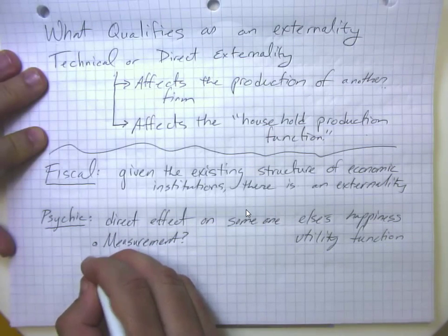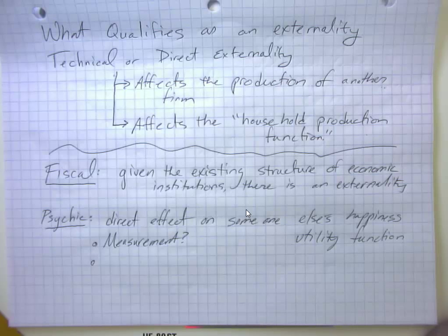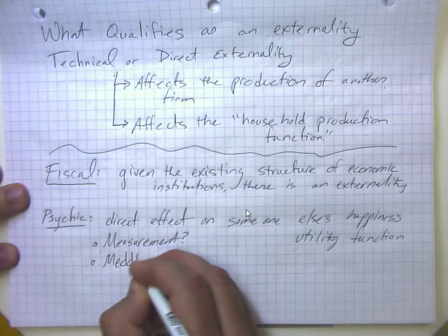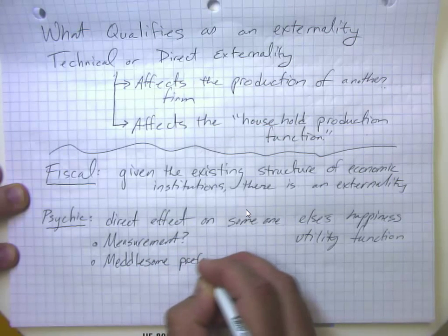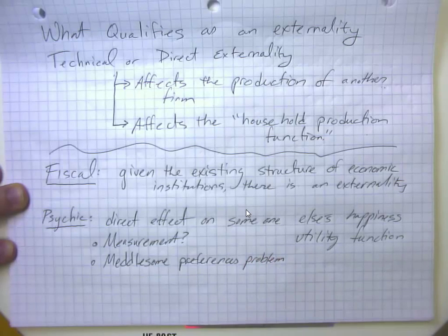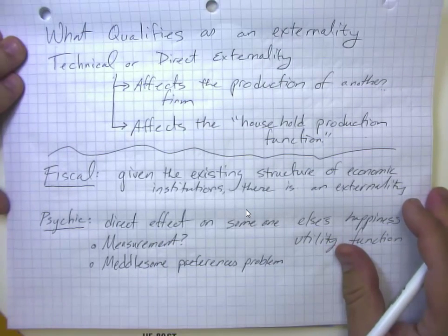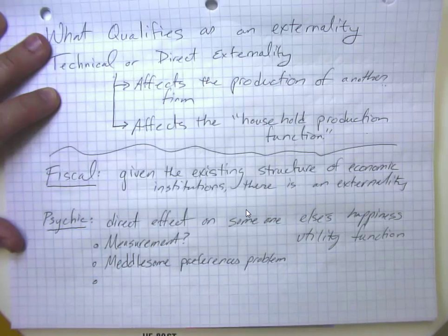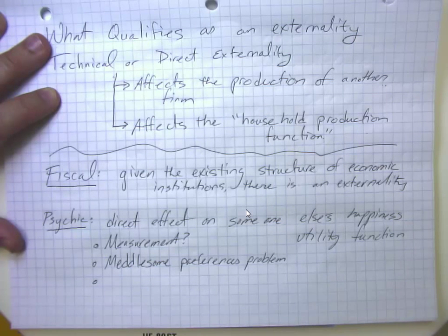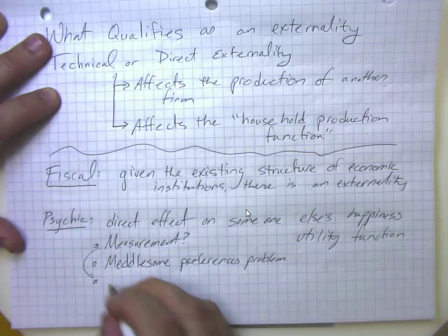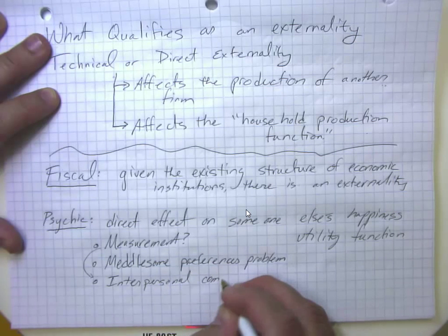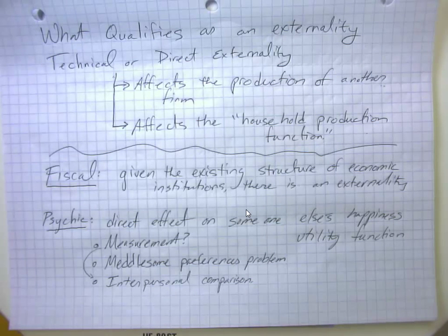The other thing here is that if we start thinking about social policy and how we would react to it, essentially we're going to allow social policy to be determined by people's preferences about other people's behavior and consumption. And so this sometimes presents what's called the meddlesome preferences problem. It may or may not be a problem, but essentially we're saying that we're going to take into account the fact that maybe you're unhappy when you see people holding hands who are of different races or the same sexes or something like that.